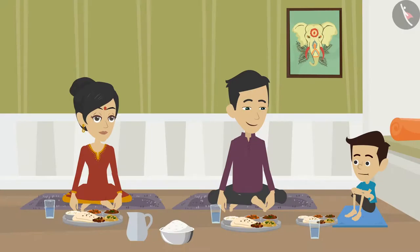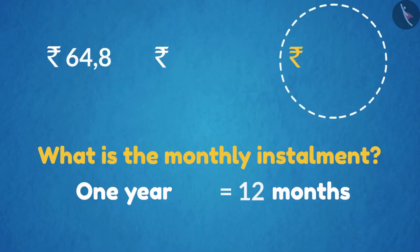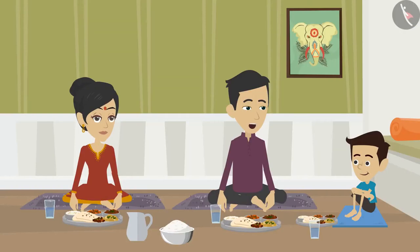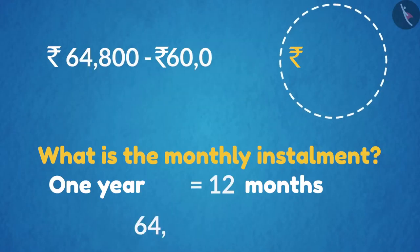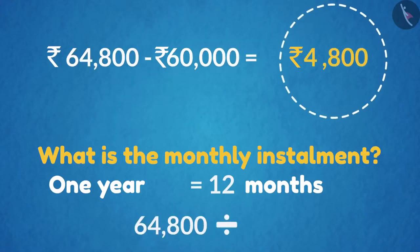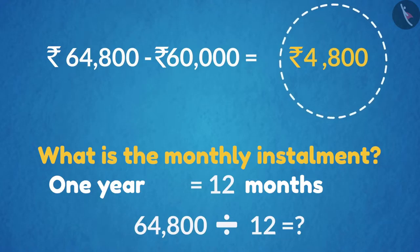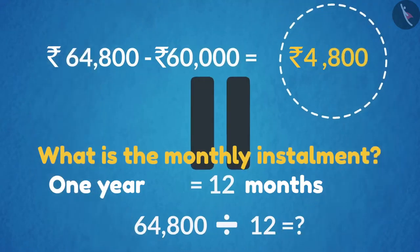How many months are there in a year? 12. Since I've taken the loan for one year, we will divide the total amount by 12. Tell me, how much do we get if we divide 64,800 by 12? You can pause the video if you want and think about it.